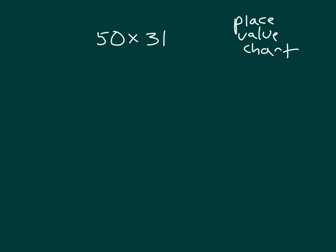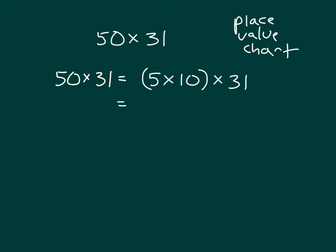Let's work through another example. Here we have 50 times 31. We can break apart 50 into 10 times a number — 50 is equal to 10 times 5. So we can rewrite this as 5 times 10 times 31. Using the associative property, we are now at 5 times 10 times 31.